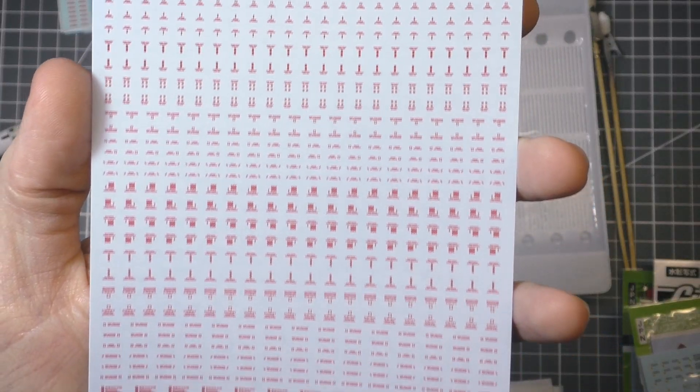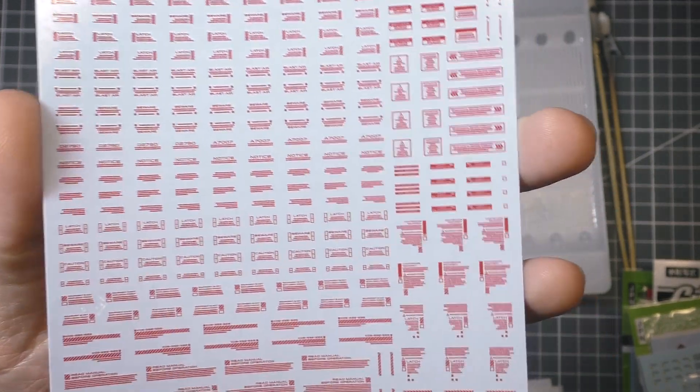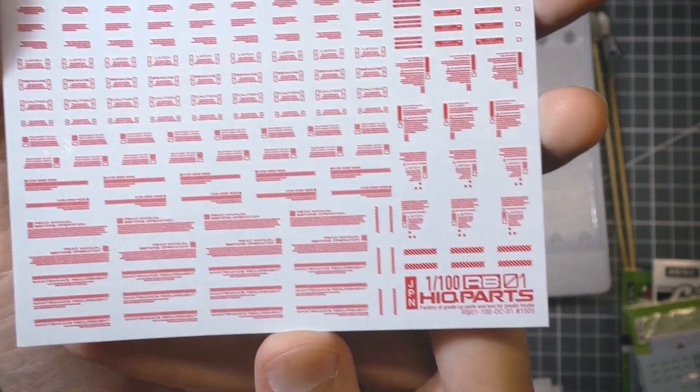Now the decal time. I use this set of generic caution markings from Haikyuu Parks, as well as some leftovers from original Waterslides set.